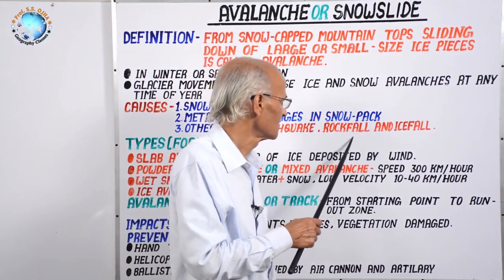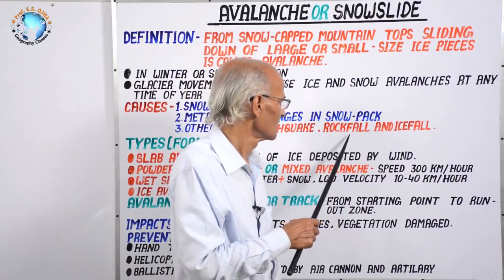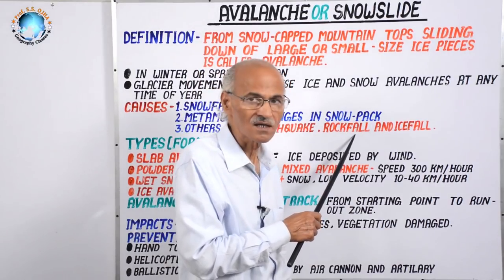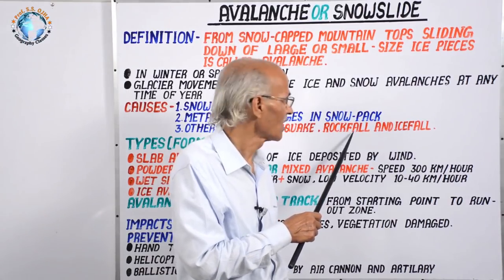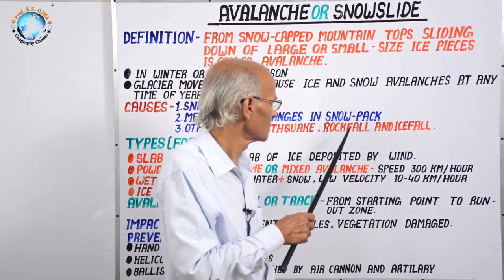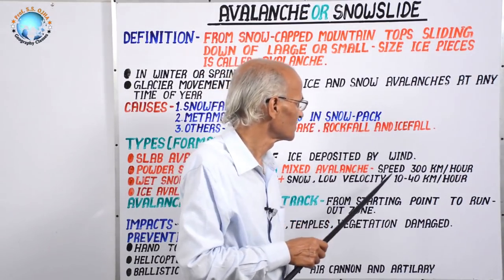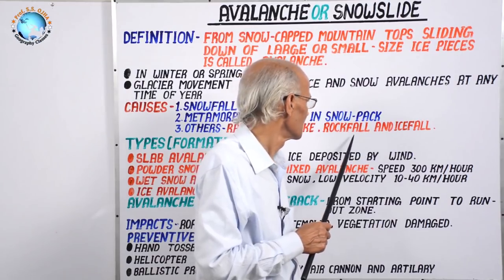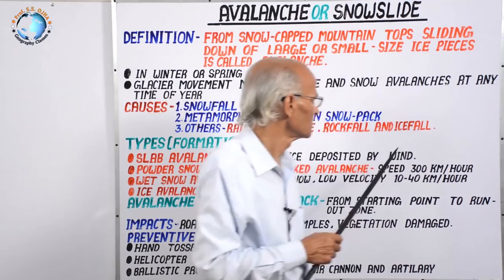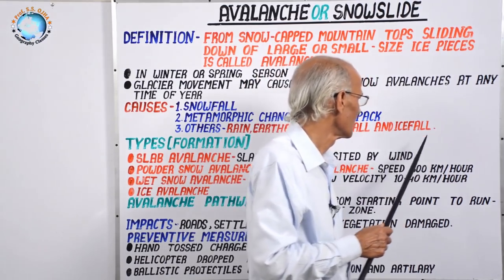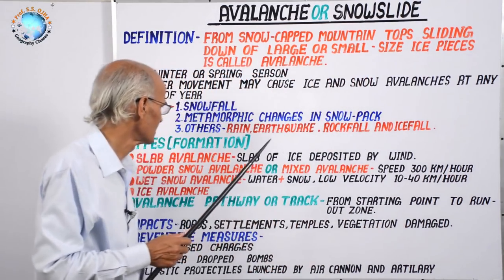Another cause is rockfall. Sometimes due to earthquakes, hanging rocks or rocks along steep scarps and slopes come down, and the ice deposited over them also comes down. That is why it is called rockfall avalanche, and sometimes icefall also takes place along with this rockfall.